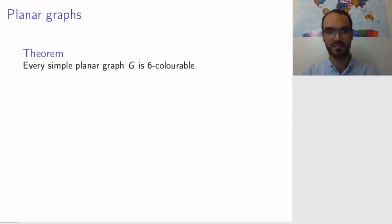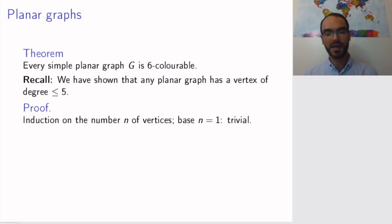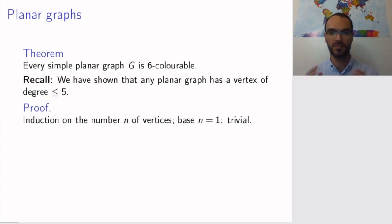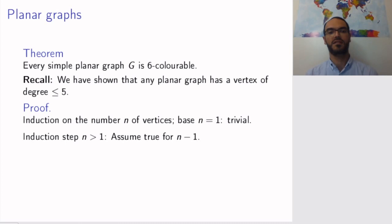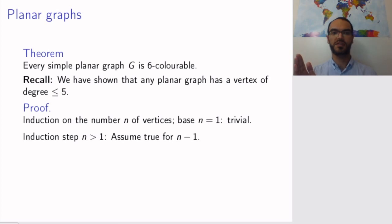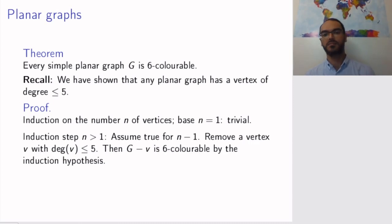The proof is similar to that of the previous theorem, but we need the fact we have shown before: that any planar graph has a vertex of degree at most five. This is something we have shown before — if you don't remember it, go back to that result. We will use induction on the number of vertices. Of course, if you just have one vertex the graph is six-colorable, no problem. So assume you have a graph with n vertices greater than one, and by induction we assume that for all simple planar graphs with n minus one vertices the theorem is true.